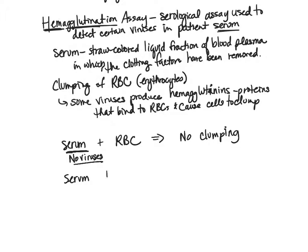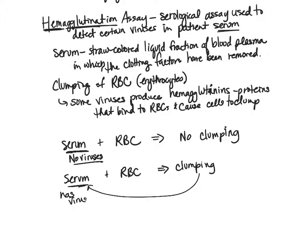If we take the serum, add it to red blood cells, and we see clumping of the red blood cells, then we know that the serum has viruses in it — because those viruses produce hemagglutinins causing that clumping. We've separated the serum from the red blood cells of the actual person, so in the lab we're taking patient serum and adding fresh red blood cells to see if clumping happens. However, this only tells us that a virus that makes hemagglutinins is present — not the specific type.